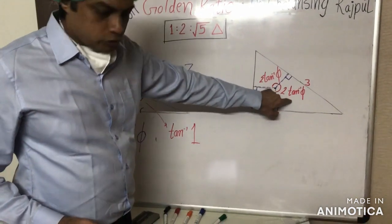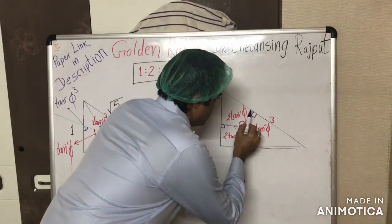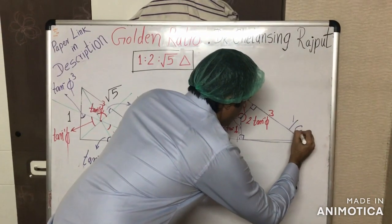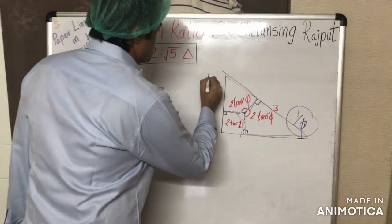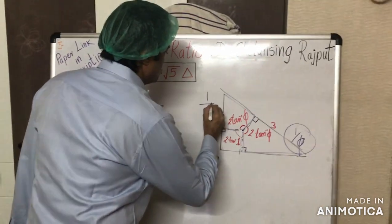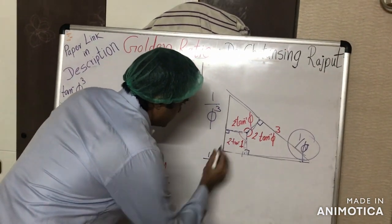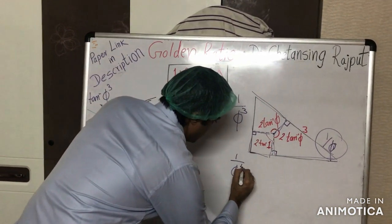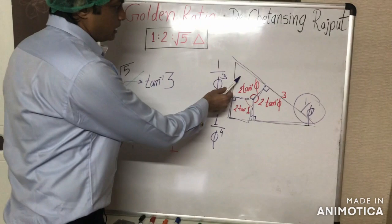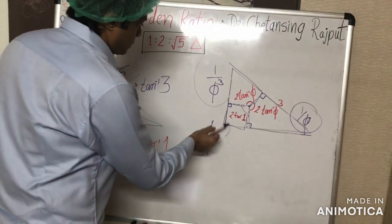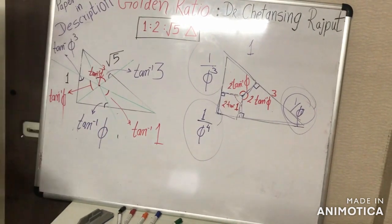The areas of the three portions created by the inradii can also be expressed in terms of the golden ratio. The area of one quadrilateral is precisely 1/φ³. The area of the square formed by the inradius (since the inradius squared is 1/φ⁴) is 1/φ⁴. These three areas add up to the total area of the triangle, which equals 1.